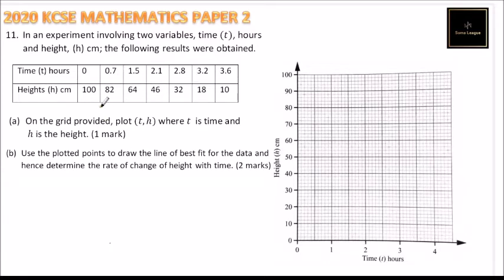3.2, 3.6. So the corresponding heights are 182, 64, 46, 32, 18, and 10.